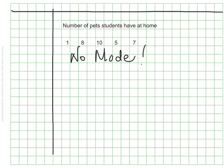It's possible to have one mode, two modes, five modes, or even no modes depending on the data that you have.